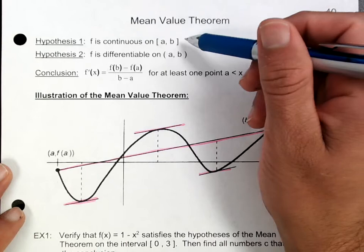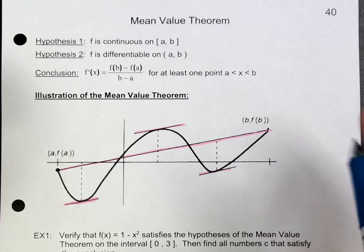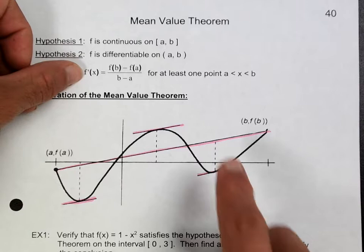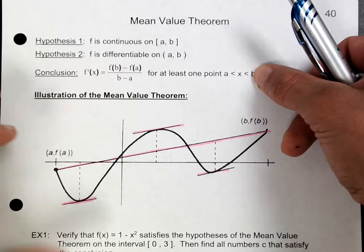This is topic 40, the Mean Value Theorem. Assuming that F is continuous on [A, B] and that F is also differentiable within that interval, the conclusion says that the instantaneous rate of change at some point within that interval is going to be equal to the average rate of change within that same interval.